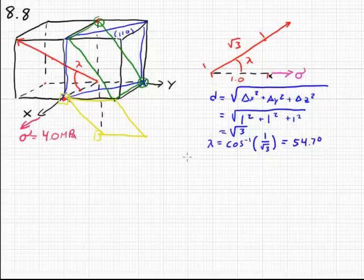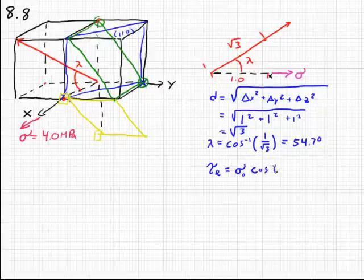We will plug that into our key equation for the resolved shear stress. That's the nominal stress times the cosine of this lambda we just found times the cosine of phi. What's phi? Phi is the angle between this direction of stress and each of the three planes that we determined. So we will draw the planes that show these angles.